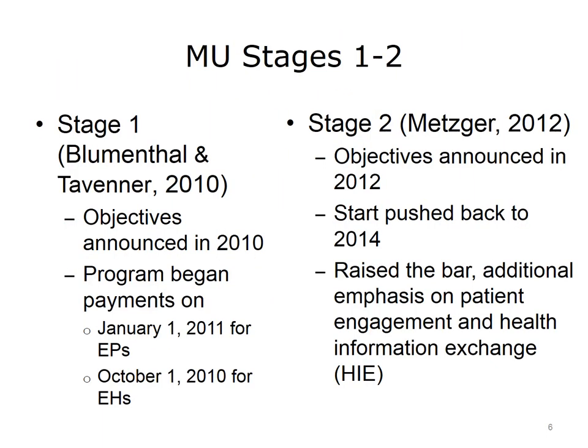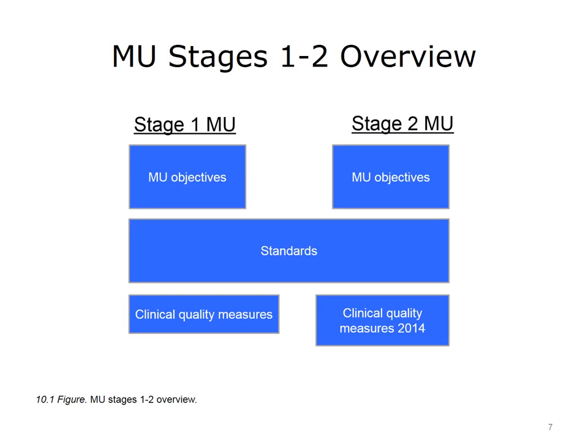The original Stages 1 and 2 were announced in 2010 and 2012, respectively. The program started making payments for Stage 1 in October 2010 for eligible hospitals and in January 2011 for eligible professionals. Stage 2 was delayed a year from its original start date and began in 2014. The Stage 2 objectives were announced in 2012 and raised the bar on many of the objectives, with additional emphasis on Patient Engagement and Health Information Exchange, or HIE. Each stage had its specific objectives, the standards needed to achieve those objectives, and the clinical quality measures — both the original CQMs and the 2014 update.